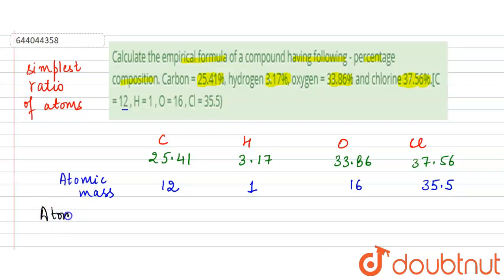Now we will calculate the atomic or molar ratio. We can call it atomic or molar ratio. How we will calculate: we are given that the compound contains this much percentage, and here we have atomic mass. So it will be 25.41 by 12, 3.17 by 1, 33.86 upon 16, 37.56 upon 35.5.